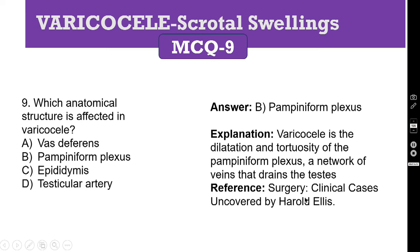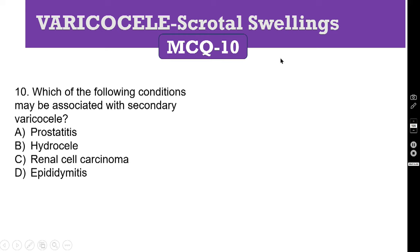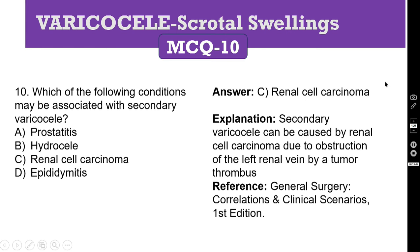This is an excellent book with more than 120 clinical cases discussed. MCQ 10: which of the following conditions may be associated with secondary varicocele? Secondary means it is not primary — some other underlying pathology is present. The correct answer is C, renal cell carcinoma. Secondary varicocele can be caused by renal cell carcinoma due to obstruction of the left renal vein by a tumor thrombus. The tumor grows into the left renal vein so the left testicular vein cannot drain properly. Reference is General Surgery Correlation and Clinical Scenarios.